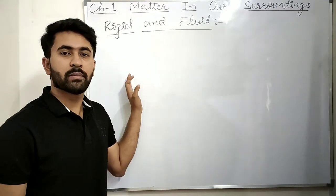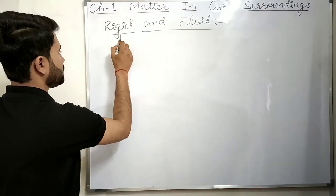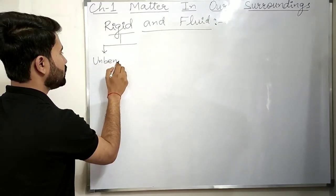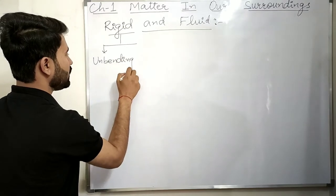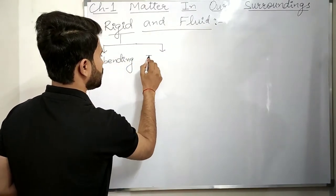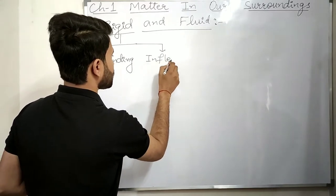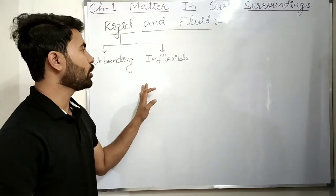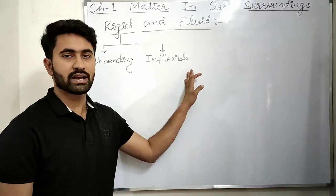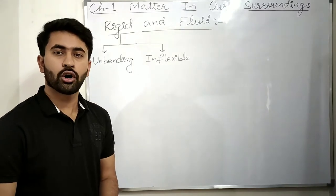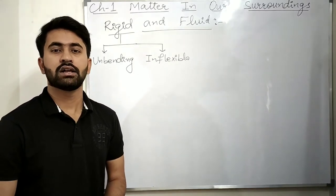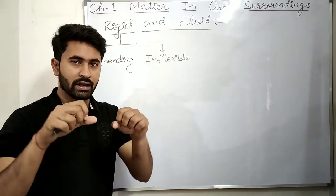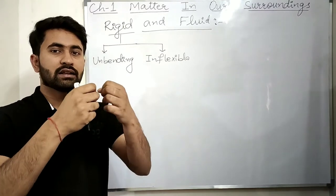The word rigid means unbending or inflexible — it means which cannot be bent or is not flexible. Stone, wall, and scissors are all rigid because they cannot be bent and they are inflexible.